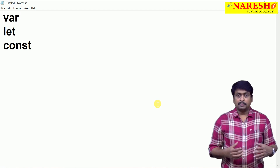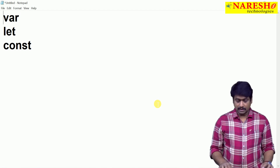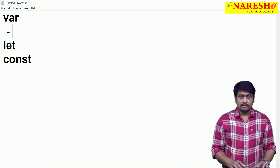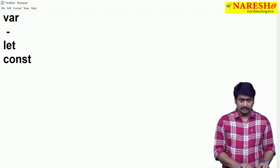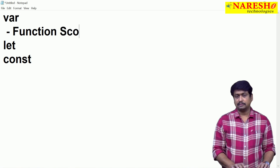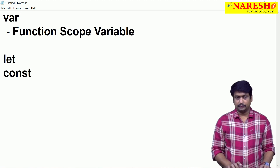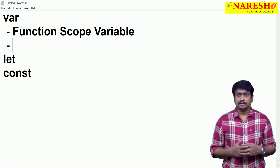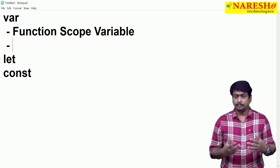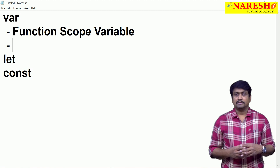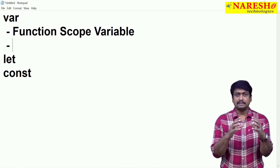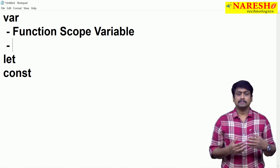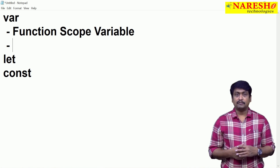Initially, variables can be declared with var. The key difference is that var is used to define a function-scope variable. That means if you declare any variable using the keyword var, it will be function-scoped — even if you declare it inside a block, it is accessible outside that block anywhere within the function. Variables declared using var are function-scoped.